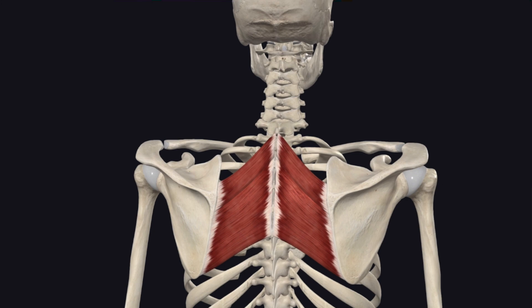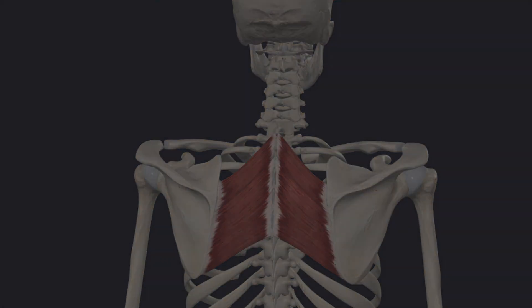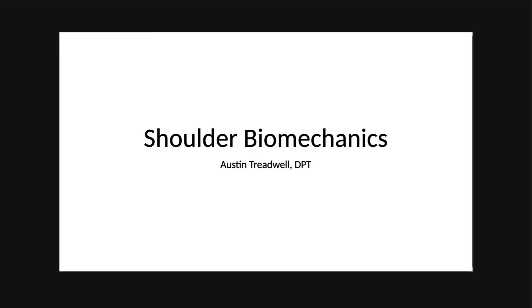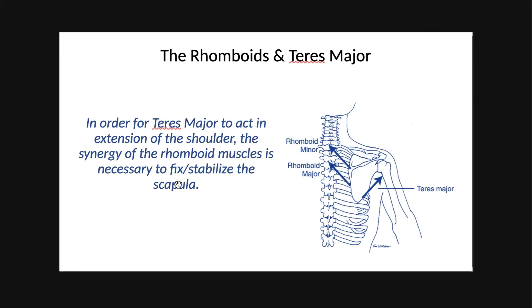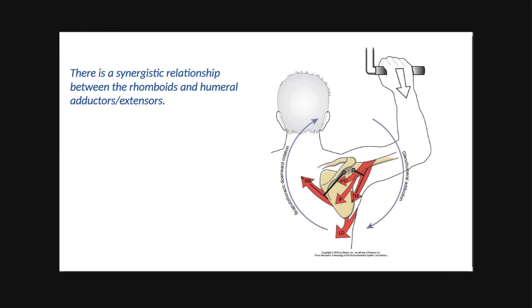The rhomboids work synergistically with teres major — they sort of brace the scapula as teres major extends the humerus. There's a similar pattern with a lot of muscles back there, not only teres major but the lats and posterior deltoid as well. These are big muscles and big movers, so it's very important to keep that balance.